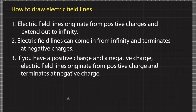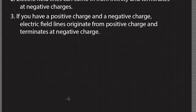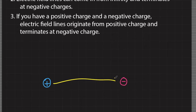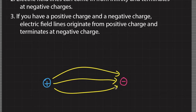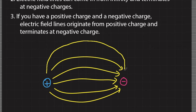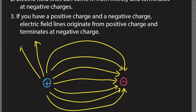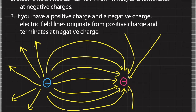Rule number three: if you have a positive charge and a negative charge, electric field lines originate from the positive charge and terminate at the negative charge. We can also apply rules one and two — electric field lines from the positive charge can also extend to infinity, and some electric field lines come from infinity and terminate at the negative charge.